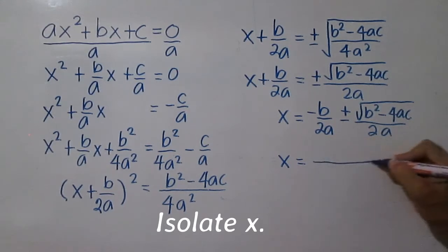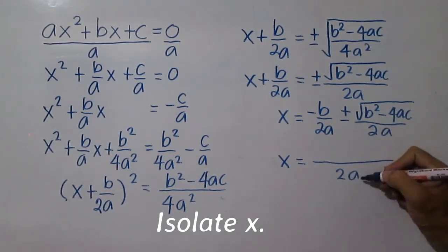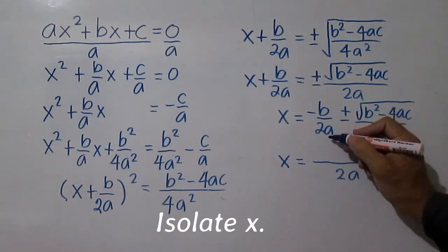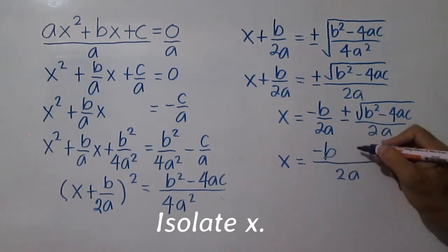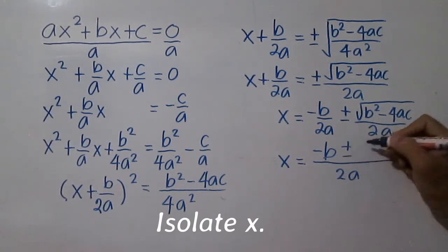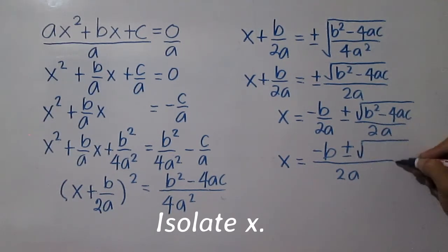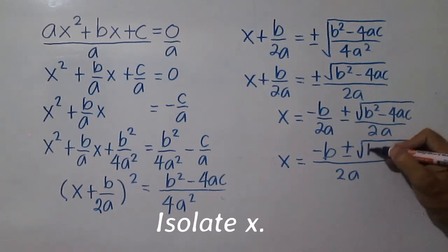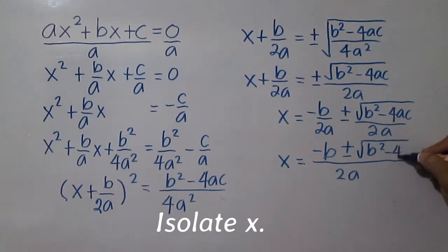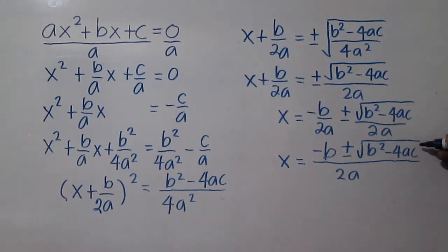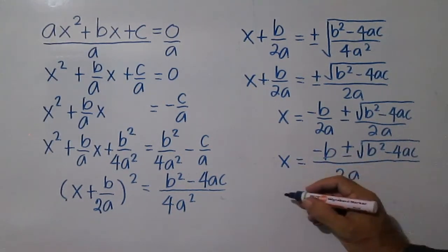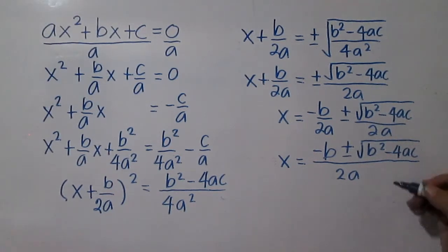Simplify using the LCD of 2a. Negative b over 2a plus or minus the square root of b squared minus 4ac all over 2a. We now have the quadratic formula: x equals negative b plus or minus the square root of b squared minus 4ac, all over 2a.